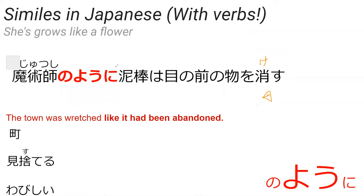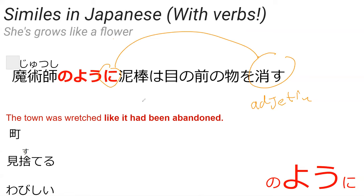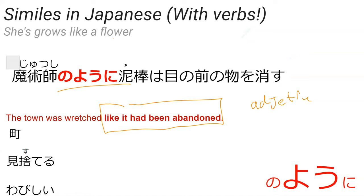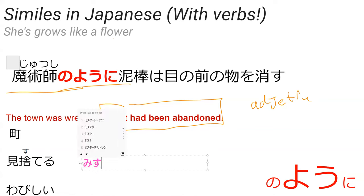'Ni' modifies a verb or an adjective. So how would you say 'like it had been abandoned' using 'yōni'? This isn't a full sentence — just the first part. 'Abandoned' or 'forsaken': 'misuteru' means 'to forsake.' So how do you change 'to forsake' into 'to be forsaken'?